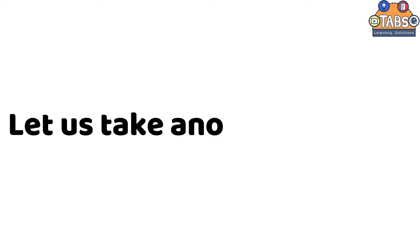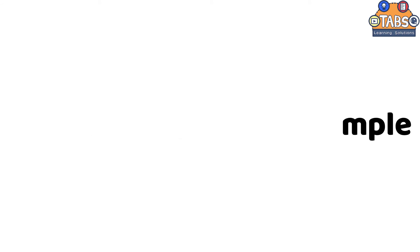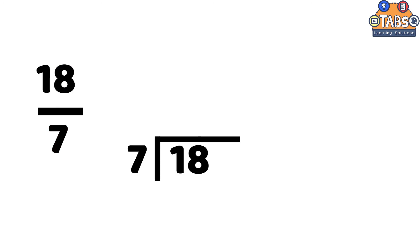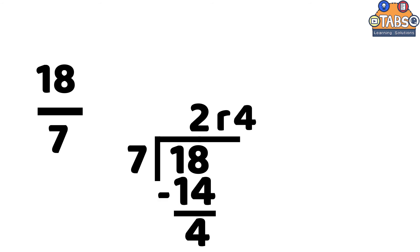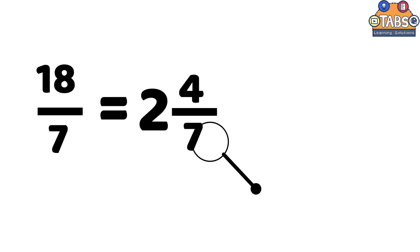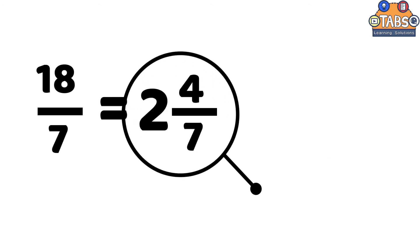Now let us take another example, eighteen over seven. We will divide the numerator by the denominator again, so the equation will be eighteen divided by seven. Eighteen divided by seven is equal to two remainder four. So the quotient will be the whole number, and the remainder is the numerator. After that, let us copy the denominator again. So the answer is two and four-sevenths.